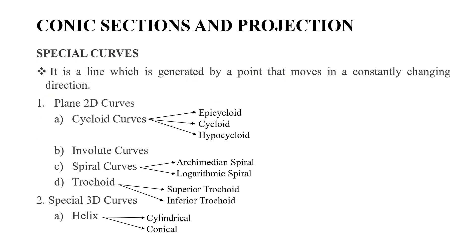A special curve is a line generated by a point that moves in a constantly changing direction. Special curves are of two types: plane 2D curves and 3D curves.